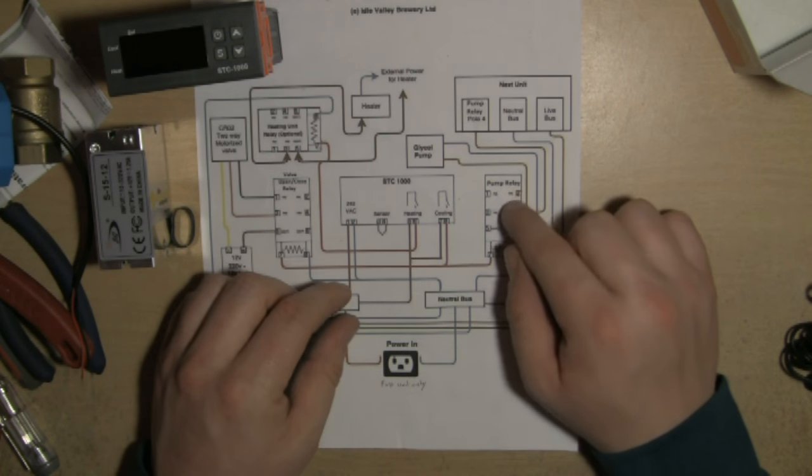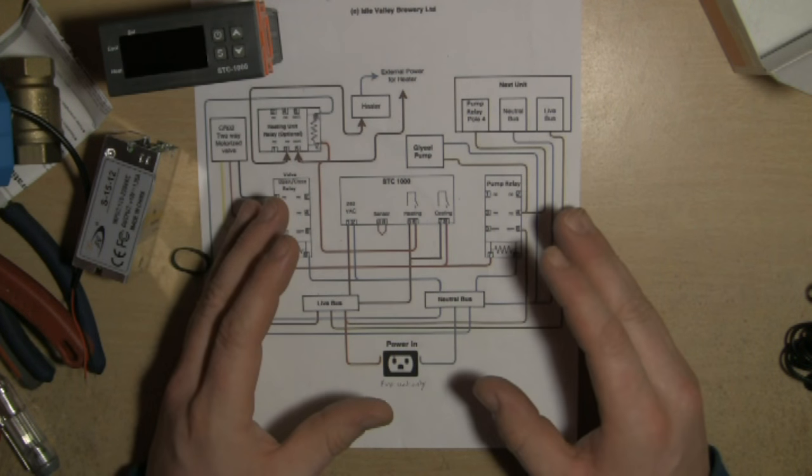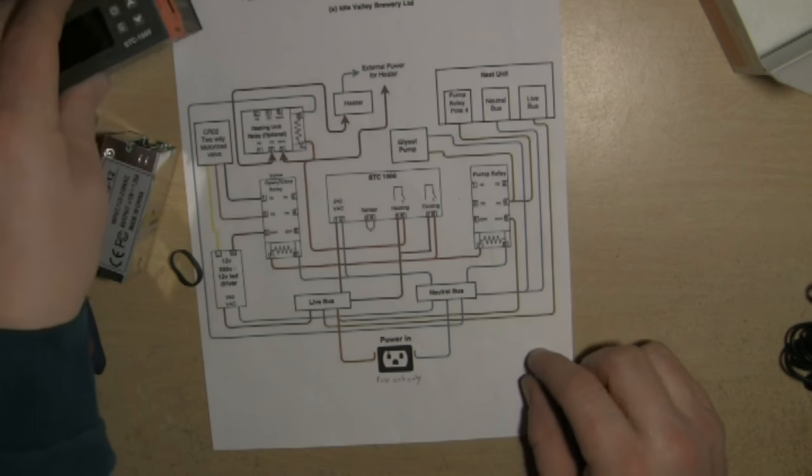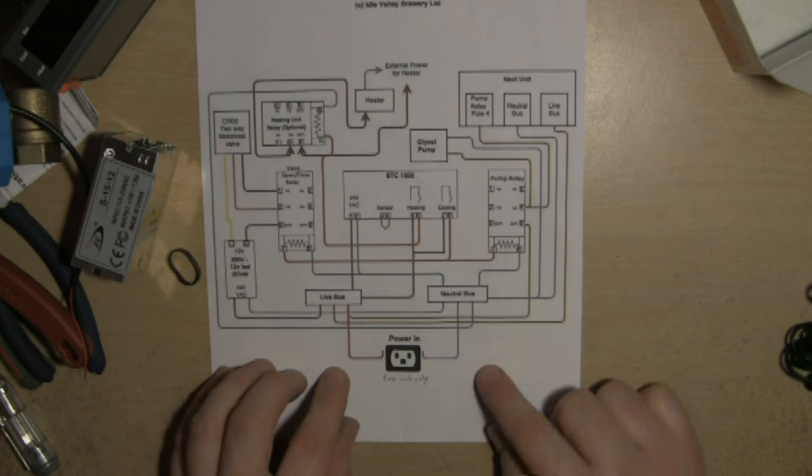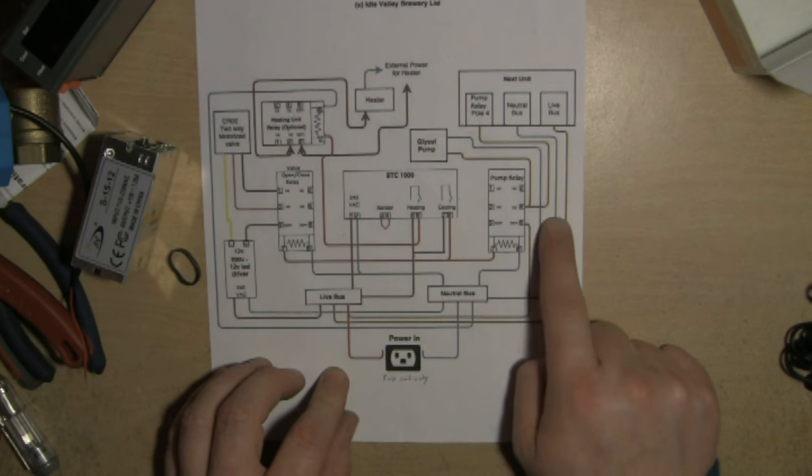You'll have one of these pump relay contacts in each box. I'm going to show you how to build the main box, and then depending on how many fermenters you want to control with it, it will dictate whether you have this section, the next unit section, with these cables coming out.